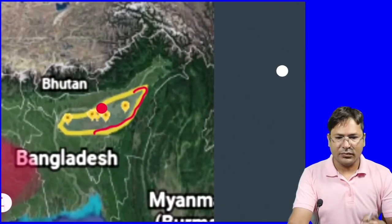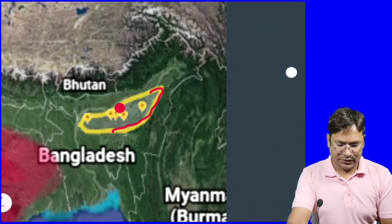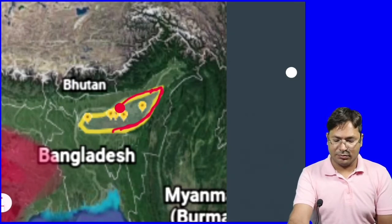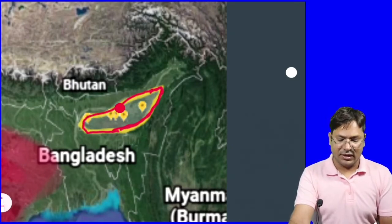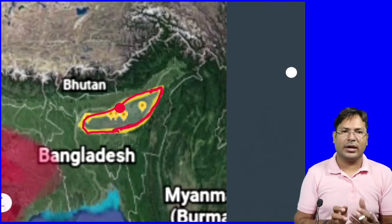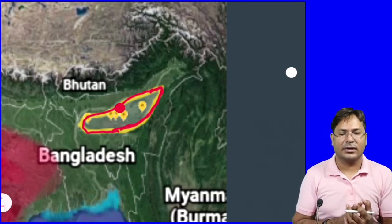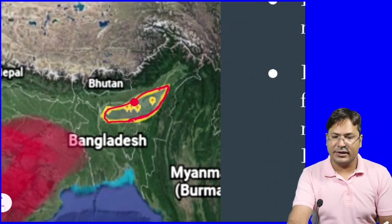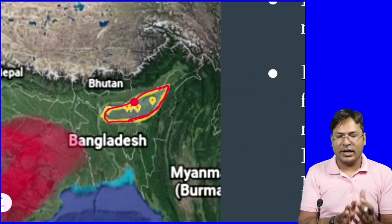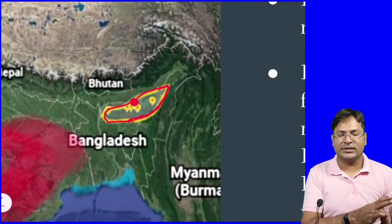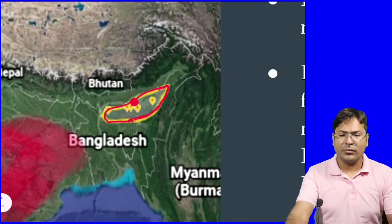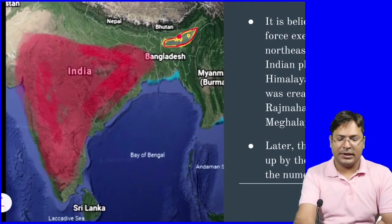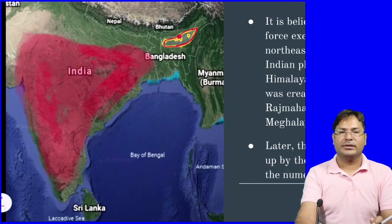This is the Peninsula, and this is the North Eastern extension of the Peninsular Plateau, which lies in Meghalaya — the Shillong and the Karbi Anglong Plateau. It is divided by a gap, separated by the country of Bangladesh. Between the Main Plateau and this extension lies Bangladesh.